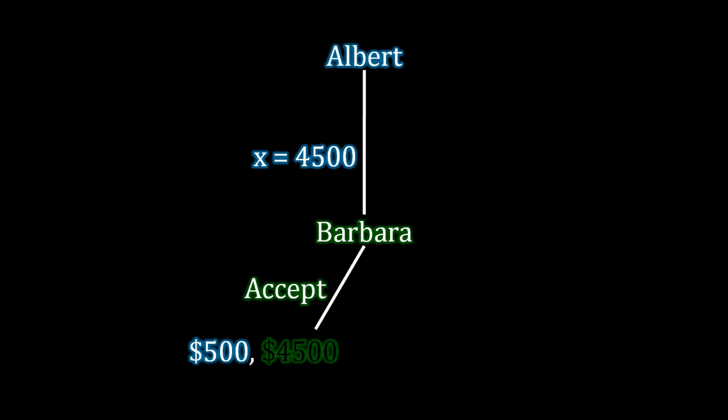And of course, offering anything less than $4,500 is silly for Albert because he could buy the vehicle very easily at $4,500 and get $500 in profit for himself, whereas if he offers anything less, he gets rejected and he gets no profit whatsoever. So it should be clear here, that if x is exactly equal to $4,500 and Barbara accepts under those circumstances, then Albert is in fact going to be offering exactly $4,500 as his optimal proposal.